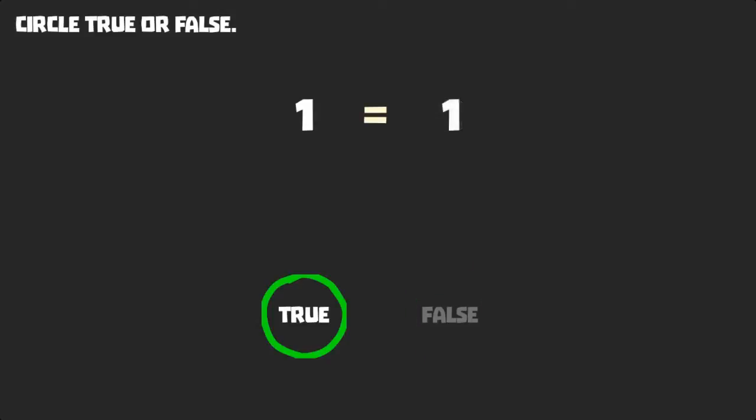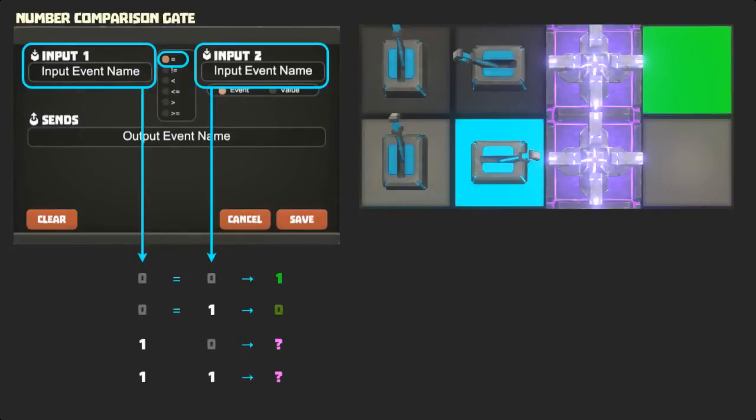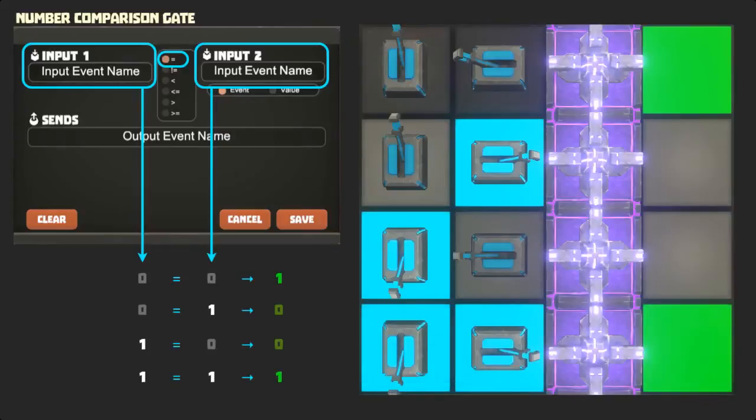When we test it with our two-switch setup, we get the results we expect. 0, 0 outputs 1. 0, 1 outputs 0. 1, 0 outputs 0. And 1, 1 outputs 1.